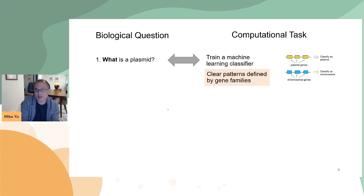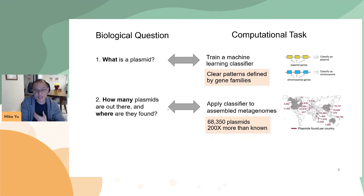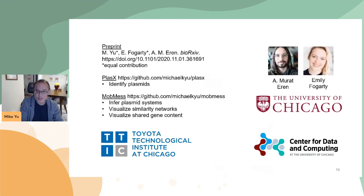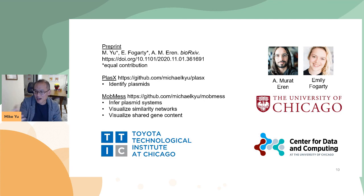To recap, in conclusion there were three questions we asked. One: what is a plasmid? We found by machine learning that there are clear patterns that can be defined by gene families. Two: how many plasmids are out there and where are they found? We find there are over 68,000 plasmids — 200 times as many as the known ones we could detect. And lastly, we see that plasmids are evolving exquisitely within the framework of plasmid systems. There are a lot of details I skipped — please see our bioRxiv preprint if you're interested. We also released two GitHub packages: PlasX for predicting plasmids, and MobMess, our algorithm for inferring and visualizing plasmid systems. I'd like to thank my collaborators, funding from the Center for Data and Computing at the University of Chicago, and support from my home institute, the Toyota Technological Institute at Chicago.